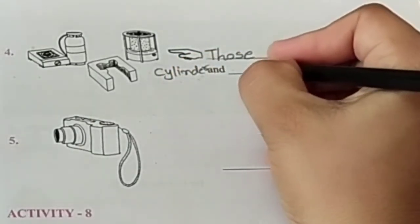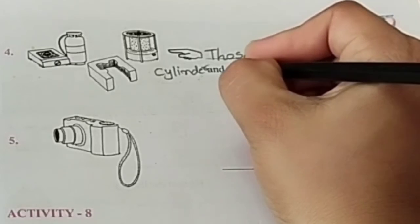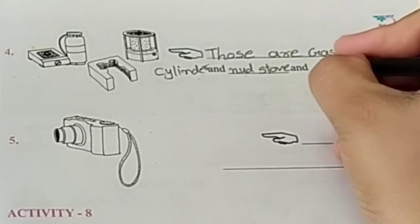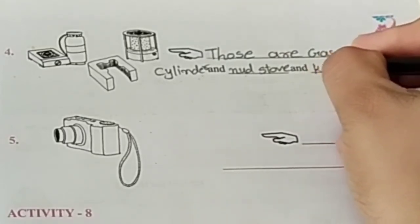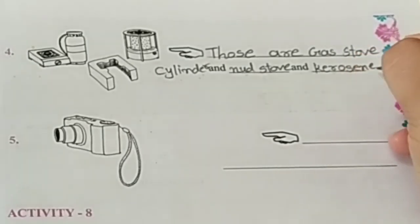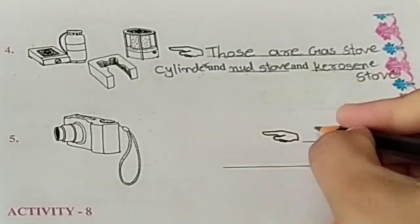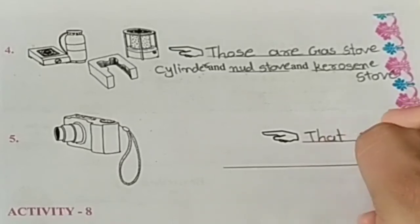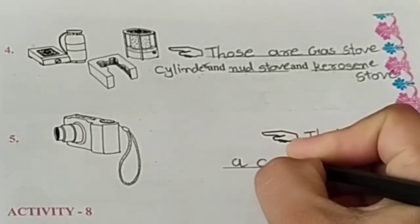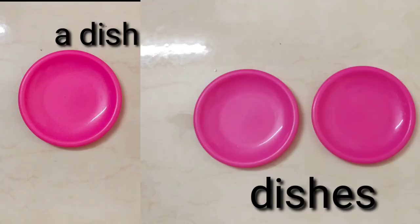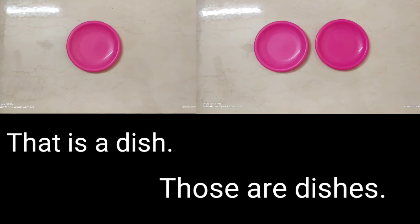Those are gas stoves — cylinder, mud stove, and kerosene stove. That is a camera. That is a dish. Those are dishes.